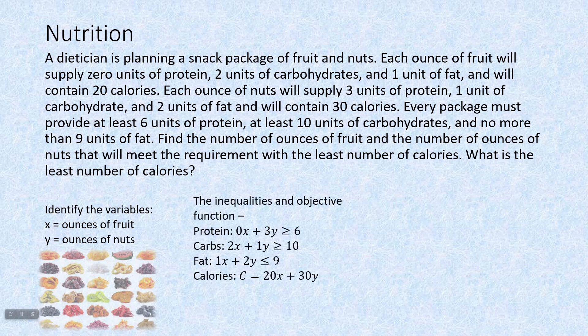Now we have inequalities. We have information about protein, carbohydrates, fat, and calories for each of these. So protein, nuts give us zero, and that's not true. Fruit gives us zero, nuts give us three, and we need at least six units of protein. So at least means it could be bigger, but six is absolutely the smallest. For the carbohydrates, fruits will give us two units, the nuts will give us one unit, and we need at least 10 units of protein. Excuse me, carbs, that word, carbs.